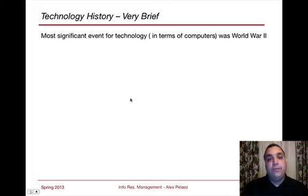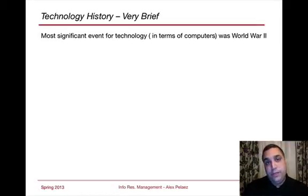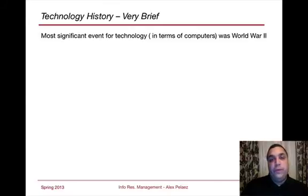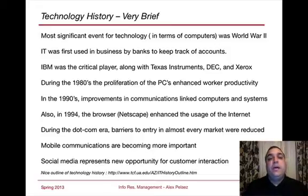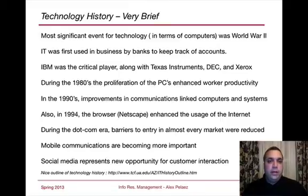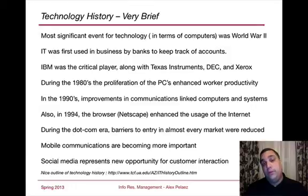A quick history of technology: the most significant event for technology was World War II. We see the advent of algorithms built for decoding, and large computers built for logistics, occurring through the late 1940s and early 1950s. IT was first used in business by banks — banks were the primary forerunner beyond some science organizations doing scientific algorithms. Bank of America was one of the first organizations to implement a system. IBM was a very critical player, along with Texas Instruments, DEC, and Xerox.